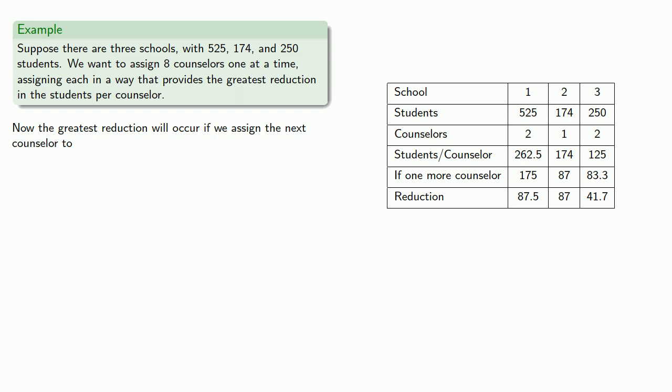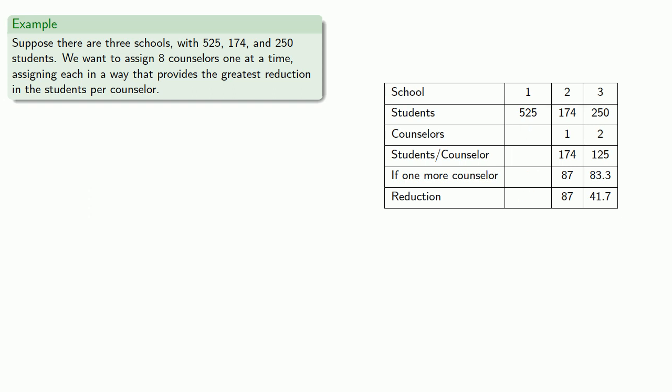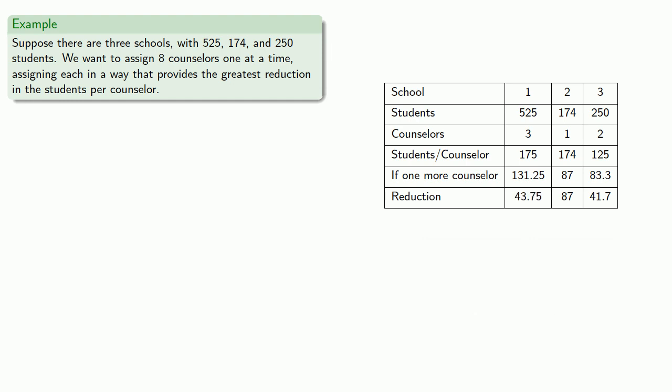The greatest reduction will occur if we assign the next counselor to School 1. The values for Schools 2 and 3 don't change, but we'll need to recompute the values for School 1 now that it has three counselors. School 1 now has three counselors and 175 students per counselor. If we give it a fourth counselor, we find the new ratio and reduction. We then look for the school that will benefit most from an additional counselor, and that's School 2.